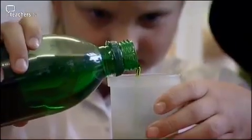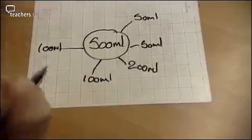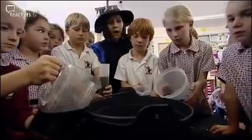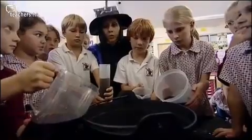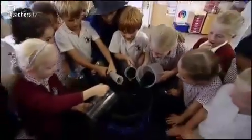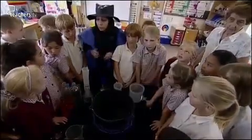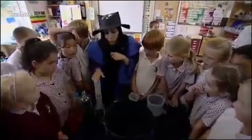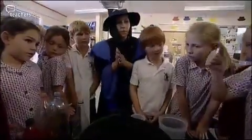Now the fun really starts. The children go off to their tables in their groups and they try to create their 500 millilitre potion using their whiteboard activity from earlier. Hubble, hubble, toil and trouble. Pour them in on the double. How much liquid have I now got altogether? We had one, two, three, four potions. It's a fabulous opportunity for speaking and listening and collaborative group work.